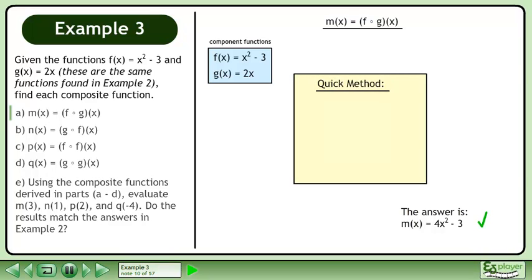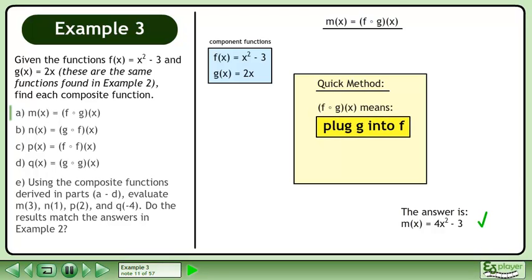We can also use a quick method to find the composite function. f of g means plug g into f. Rewrite both functions and plug g into f. This gives us 4x squared minus 3, the same result we obtained before.